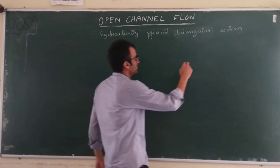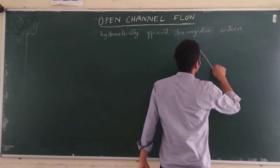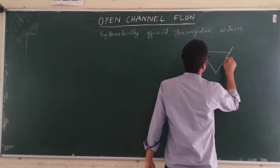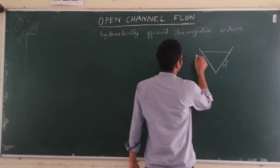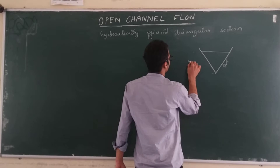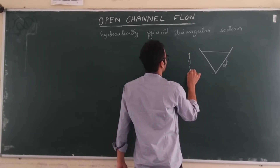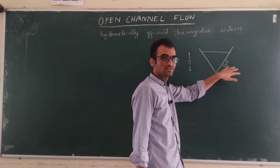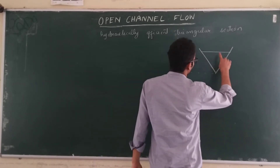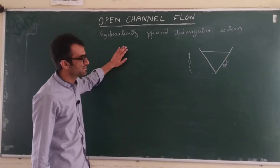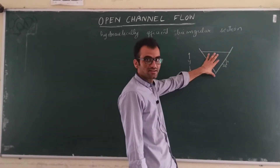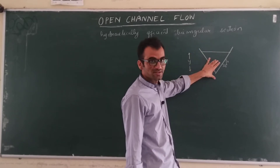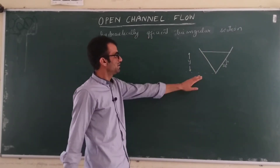Let's say we have a triangular section where Y is the depth of the section. The side slope of this section is 1 vertical to M horizontal. We have to find the conditions for the most efficient section. For the efficient section, we know that the wetted perimeter should be minimum, so we will derive this condition for triangular section.